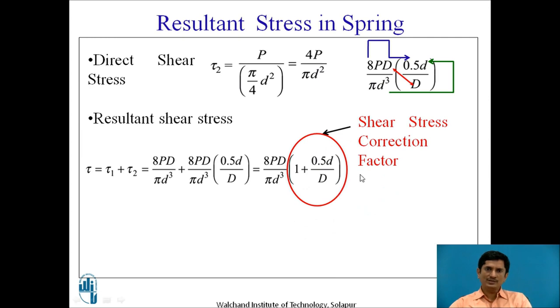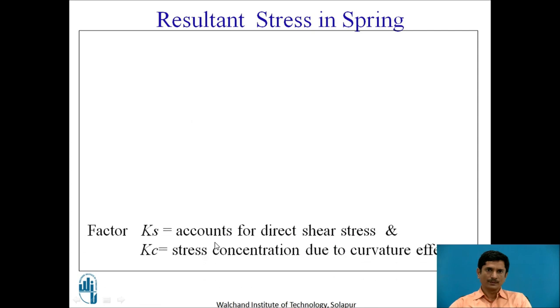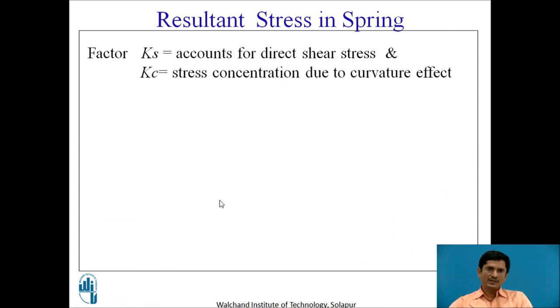I am going to mention it as shear stress concentration factor. Then, d by D we have used as 1 by c. Hence, I have replaced this term. I have rewritten it as ks, a factor. What is that factor? Shear stress concentration factor, 1 plus 0.5 divided by c. Hence, the equation changes to tau equals ks into bracket 8P D upon pi d cube.